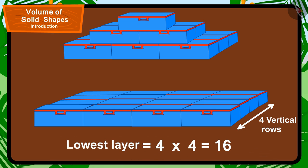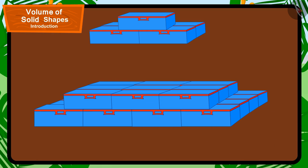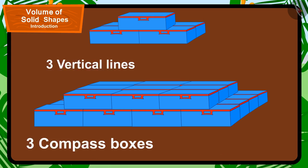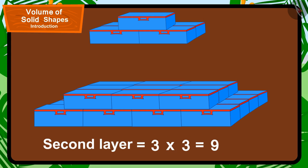The layer above it has three vertical lines, and each vertical line has three compass boxes. This means the second layer has three times three, that is nine compass boxes.